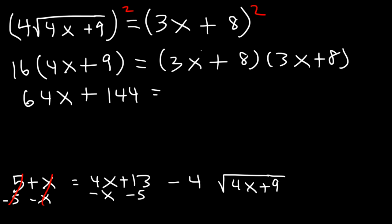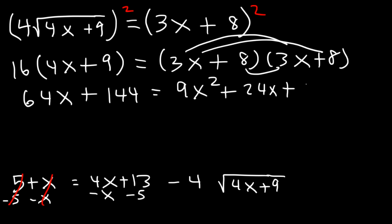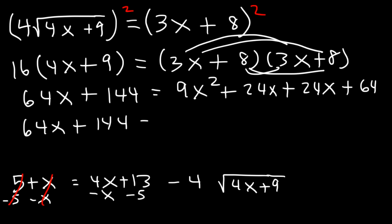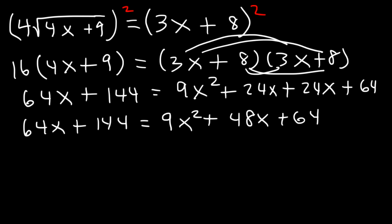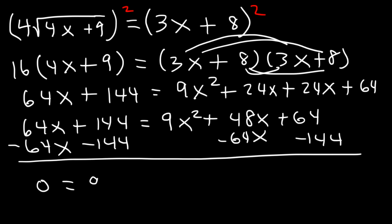Now let's FOIL the right side: 3x times 3x is 9x squared; 3x times 8 is 24x; 8 times 3x is another 24x; and 8 times 8 is 64. Combining like terms gives us 64x plus 144 equals 9x squared plus 48x plus 64. Now subtract both sides by 64x and by 144. On the left it's zero, and on the right we have 9x squared, then 48 minus 64 is negative 16x, and 64 minus 144 is negative 80.